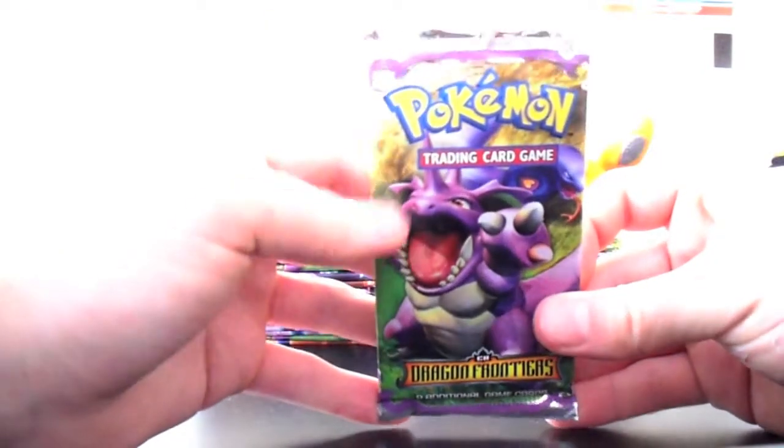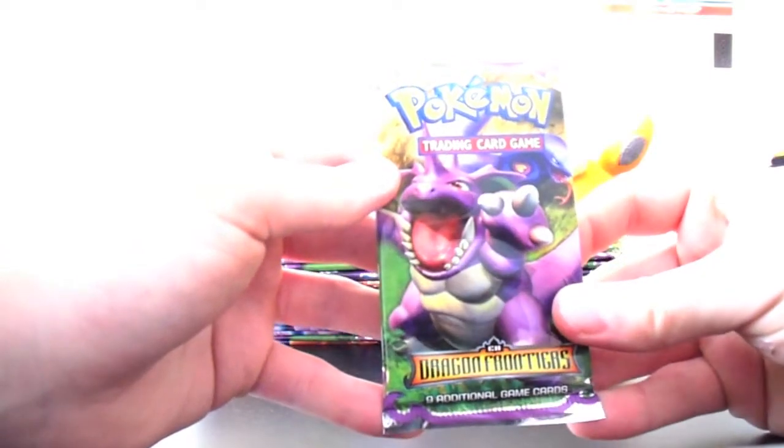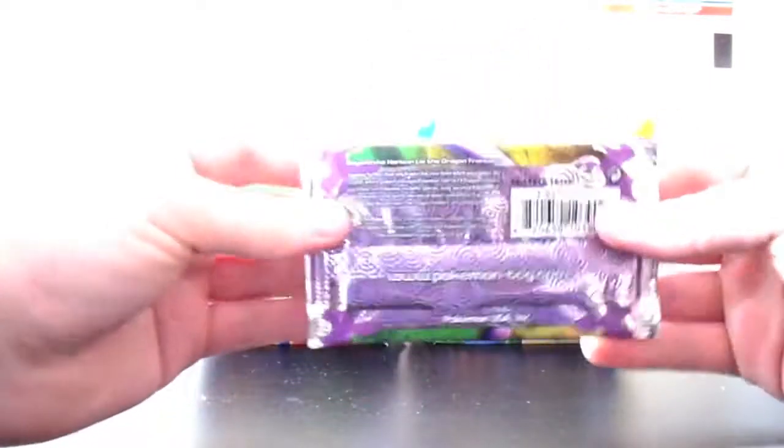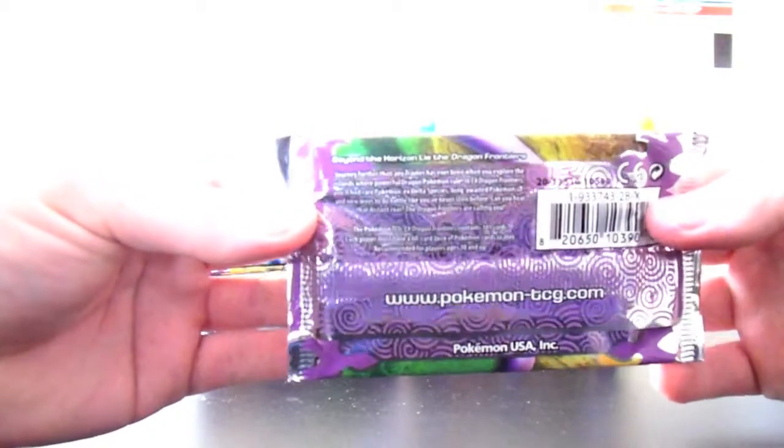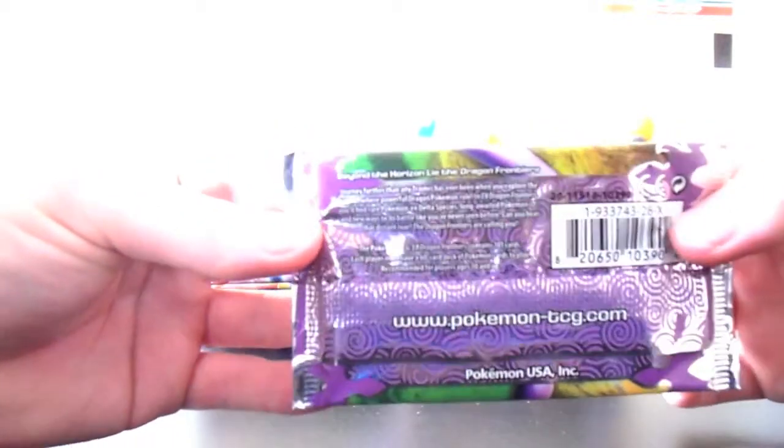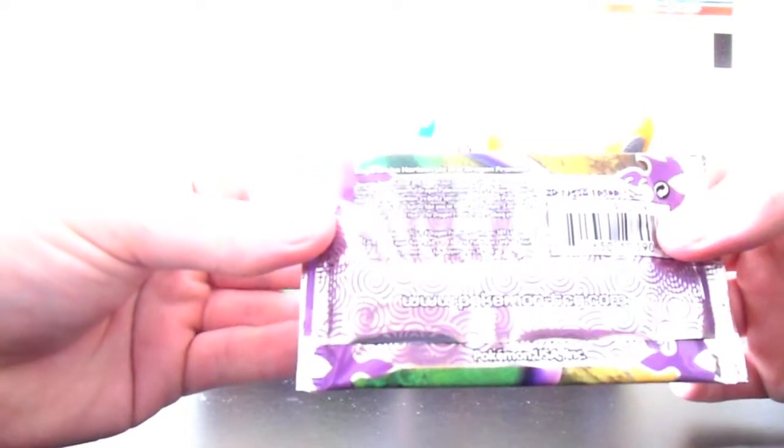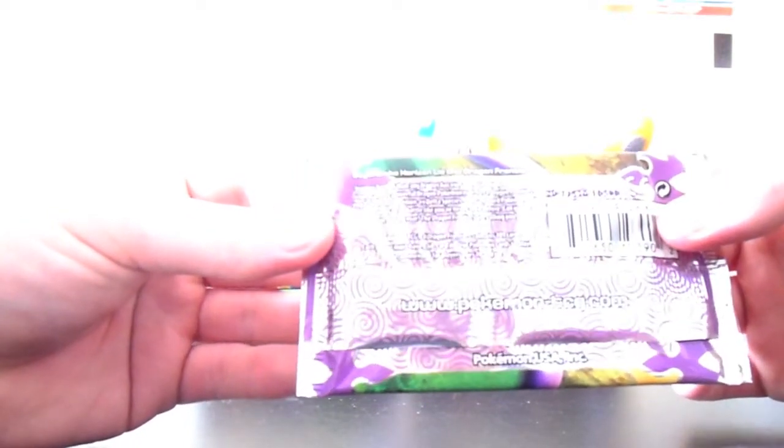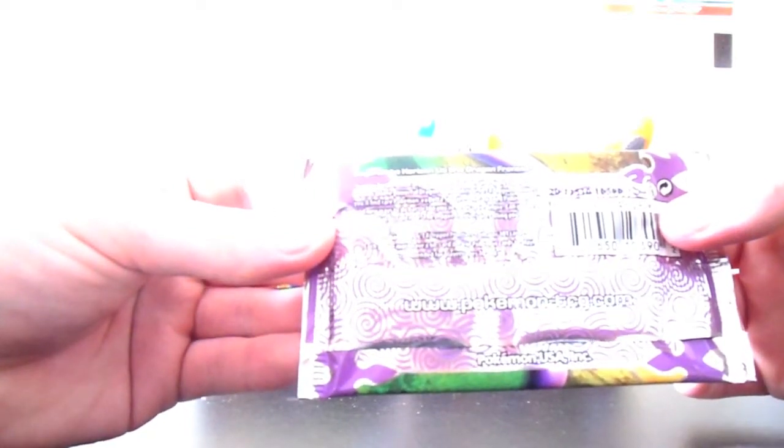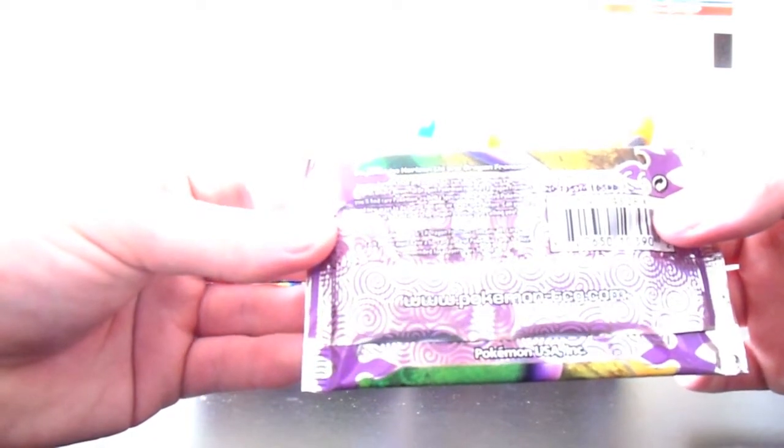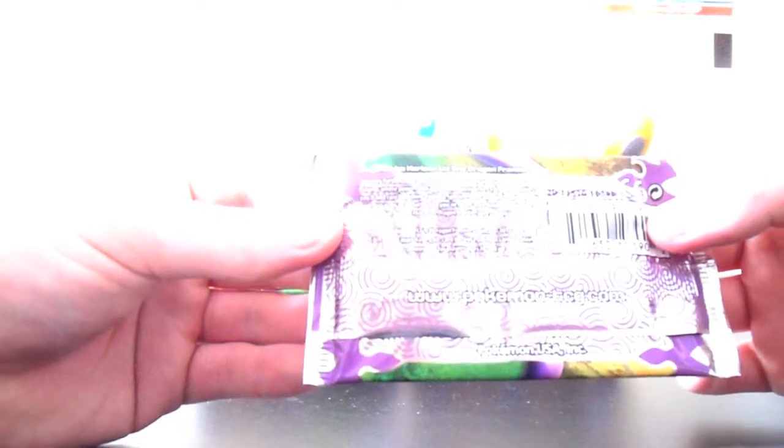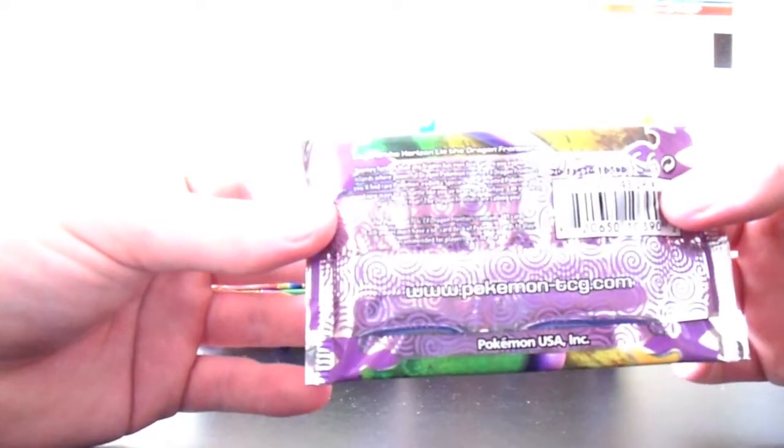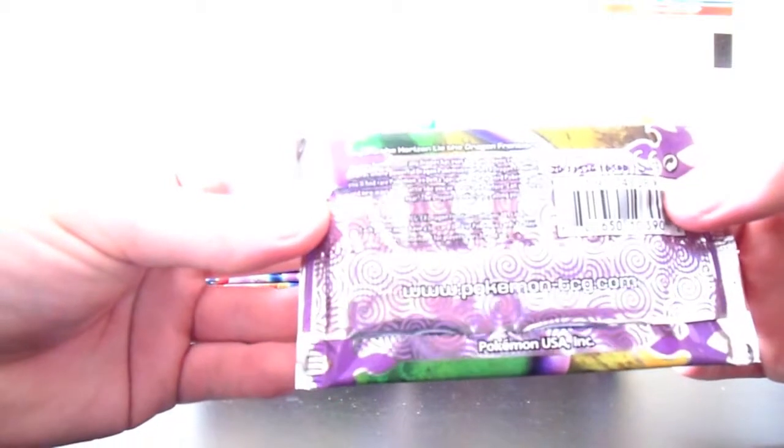We'll make it into two or three parts, and we'll see what we can get. I have some sleeves here to sleeve up any awesome pulls. Here's the back. Very, very purple, psychedelic. Beyond the horizon lie the Dragon Frontiers. Journey further than any trainer has ever been when you explore the islands where powerful Dragon Pokemon rule.